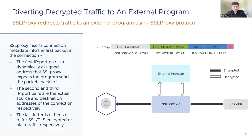SSL proxy uses a protocol called SSL proxy protocol to support redirection of decrypted traffic to an external program. SSL proxy inserts connection metadata into the first packet of the connection — including source IP and port, destination IP and port where the application is trying to connect, and the SSL proxy IP and port where SSL proxy expects the external program to return processed traffic. SSL proxy then receives that traffic, re-encrypts it, and forwards it to the backend server.